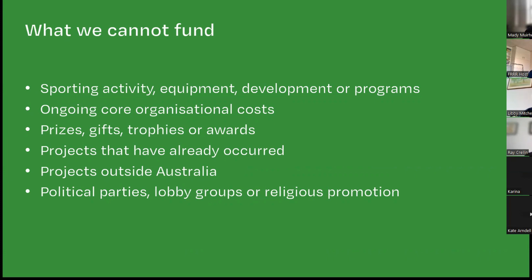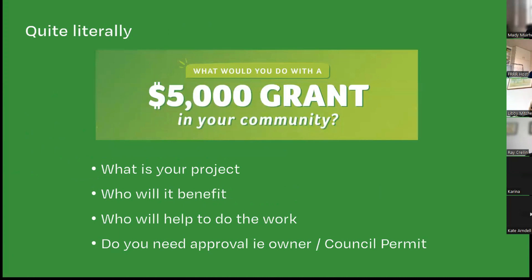The project must occur after the grants are announced in mid-October, so we're looking for projects starting around November 2023 and finishing by November–December 2024. Projects must be inside Australia, and we don't fund political parties, lobby groups or religious promotion. Quite literally, it's a $5,000 grant for your community — think about what you'd like to do with it, who it will benefit, who will be involved, and whether you need a council permit or evidence of land ownership.